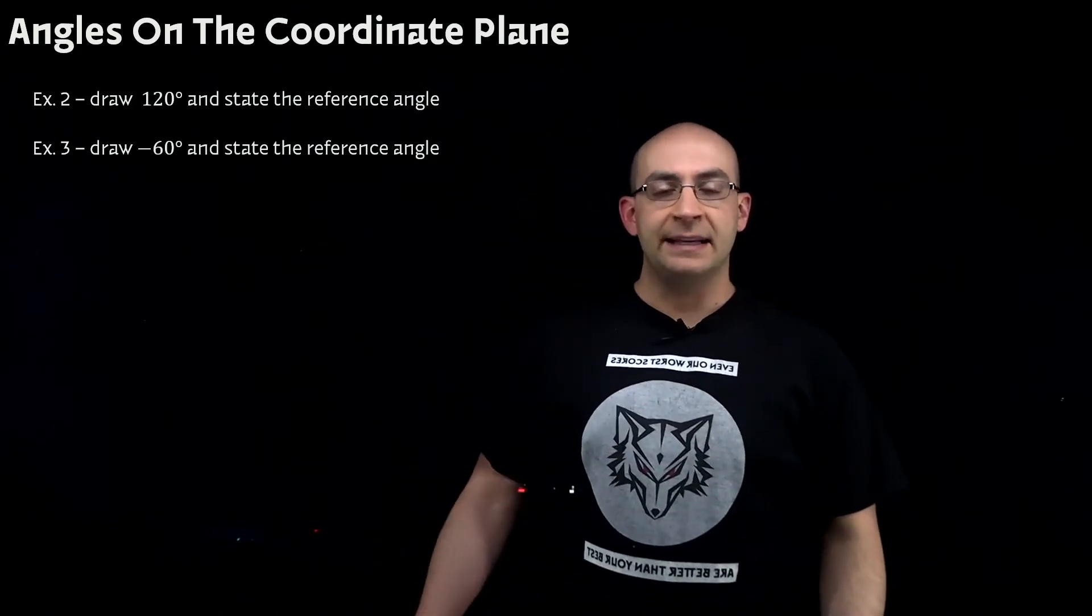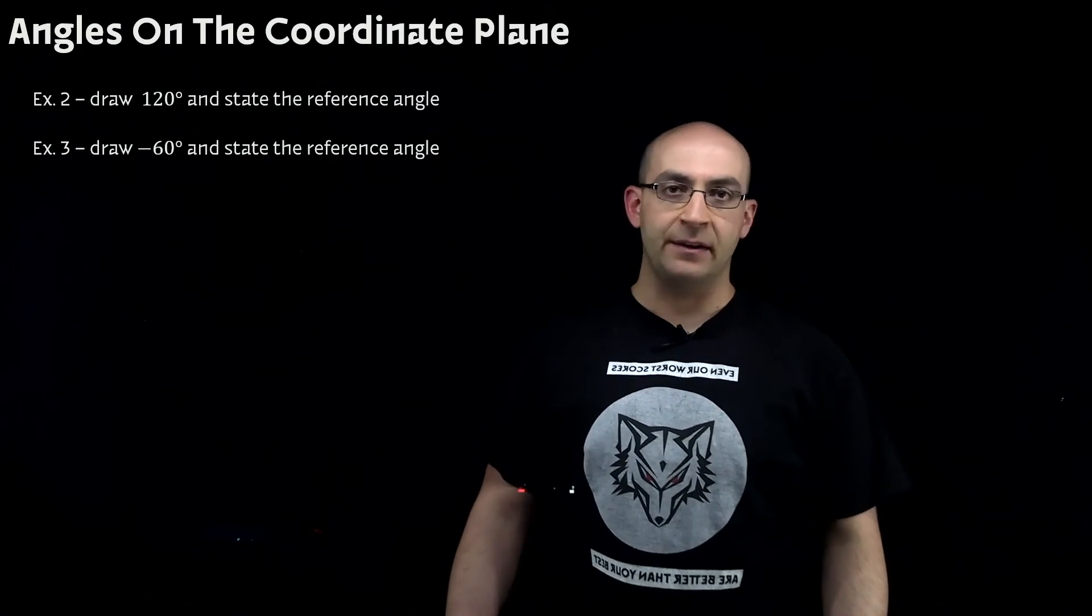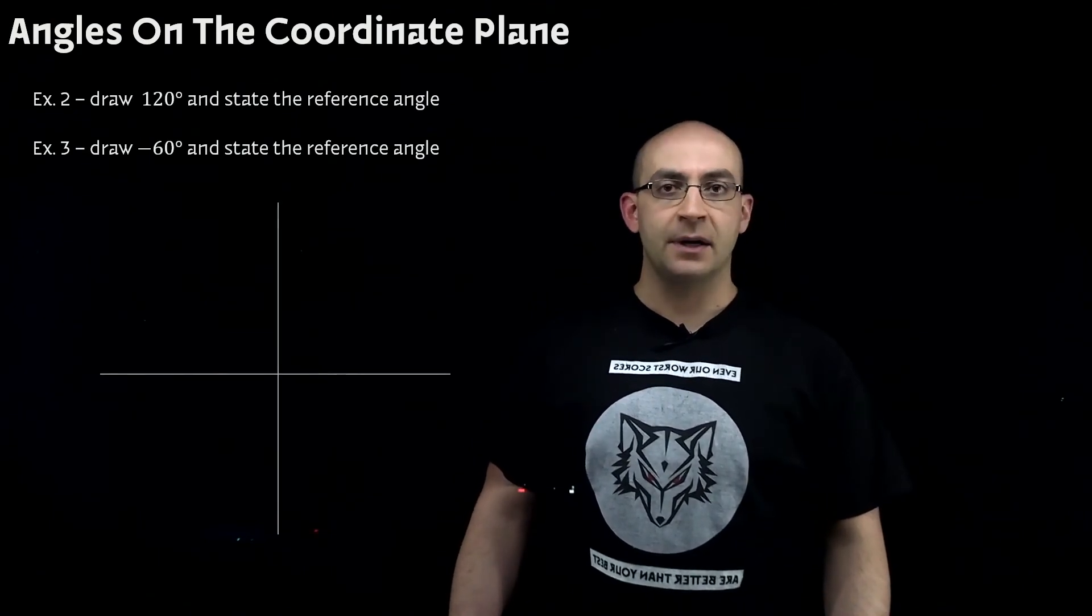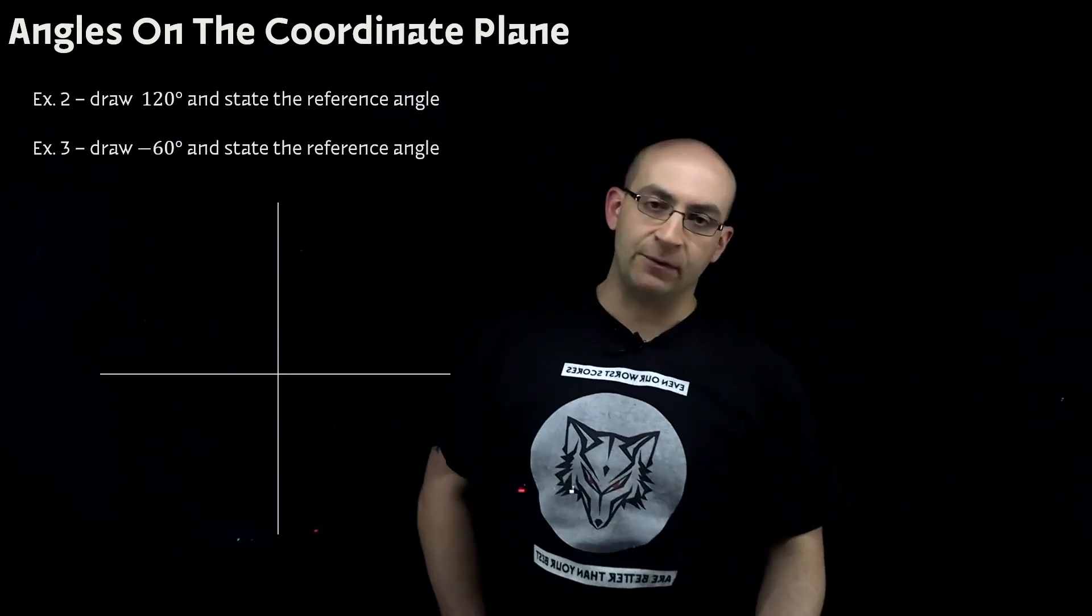In examples 2 and 3, we are going to draw certain angle measurements in theta and state the reference angles for both. This should be relatively simple. So, let's try number 2. Draw 120 degrees and state the reference angle.